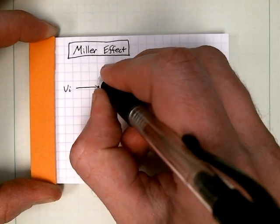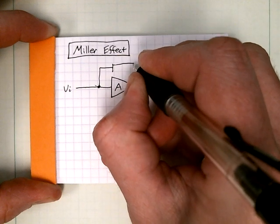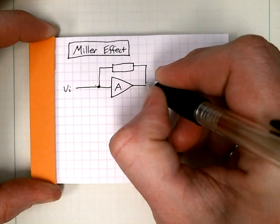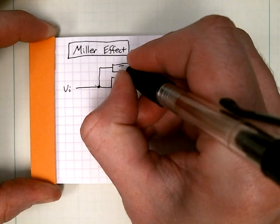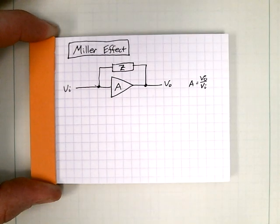And we have some impedance here. I'm going to put it just as a box because it doesn't matter what it is. Call it z because it's an impedance. It can be complex. If it's complex, it's even better.